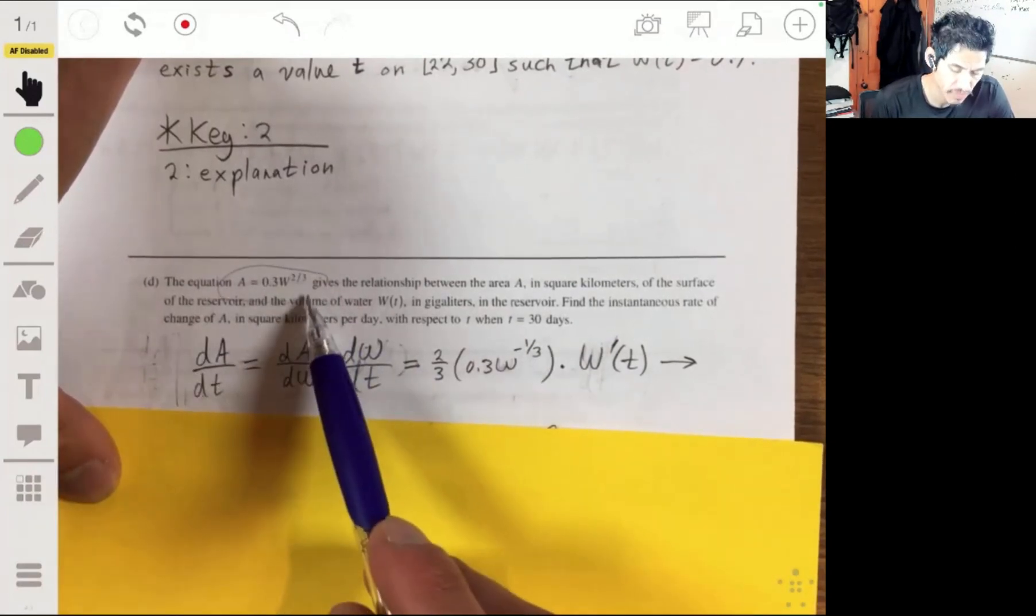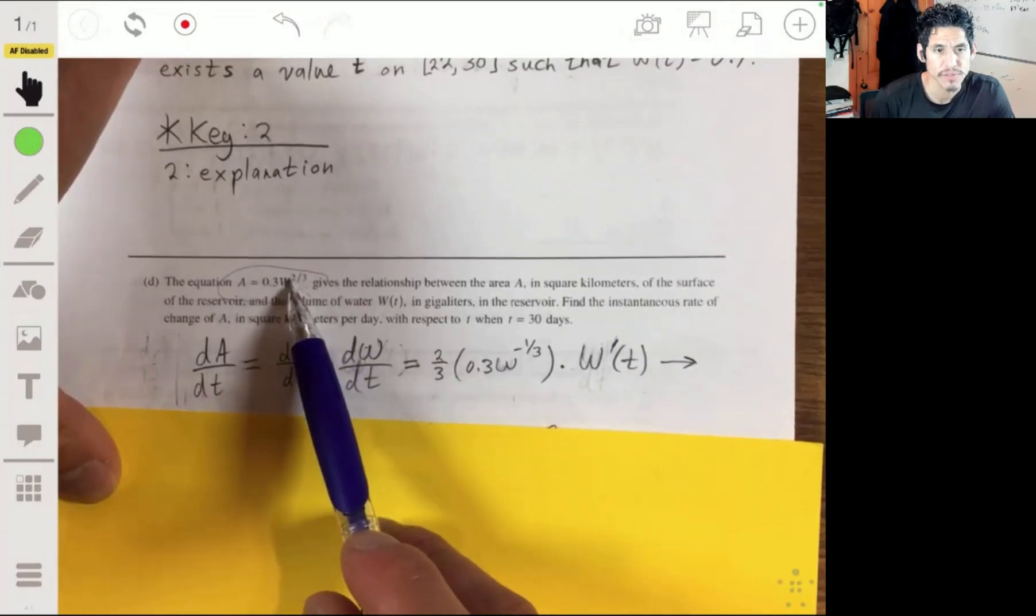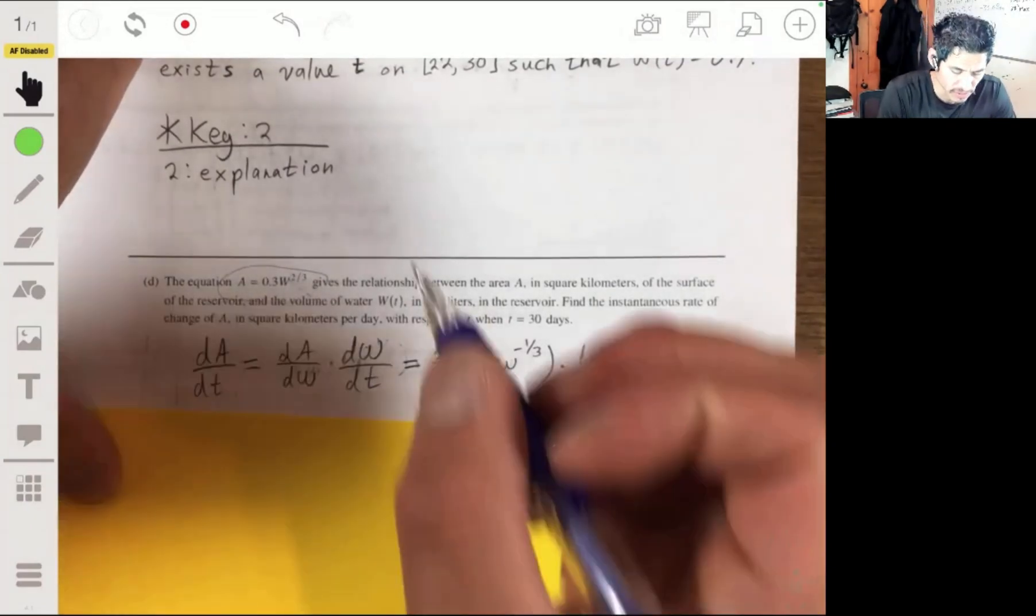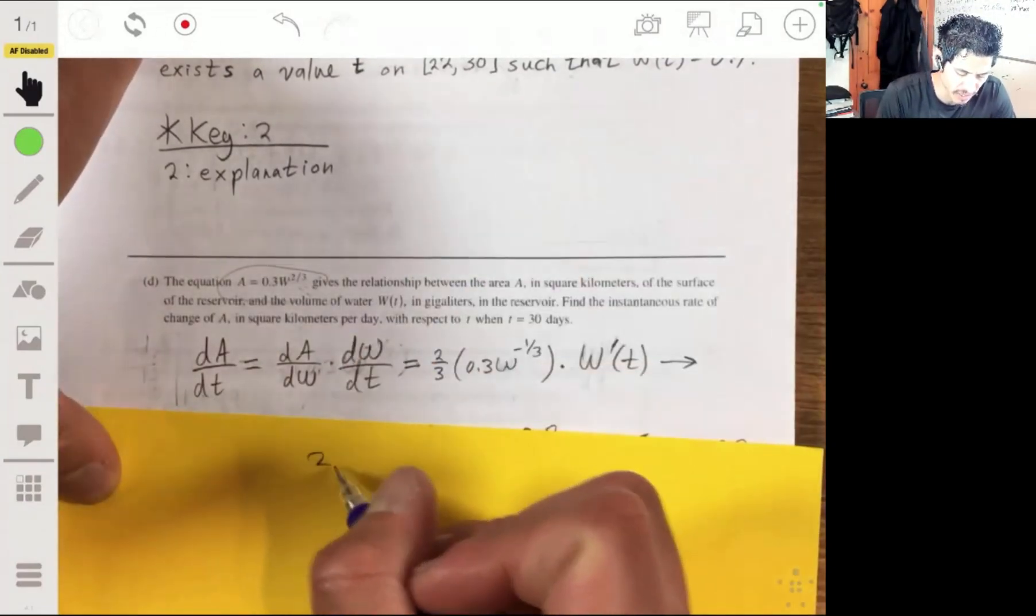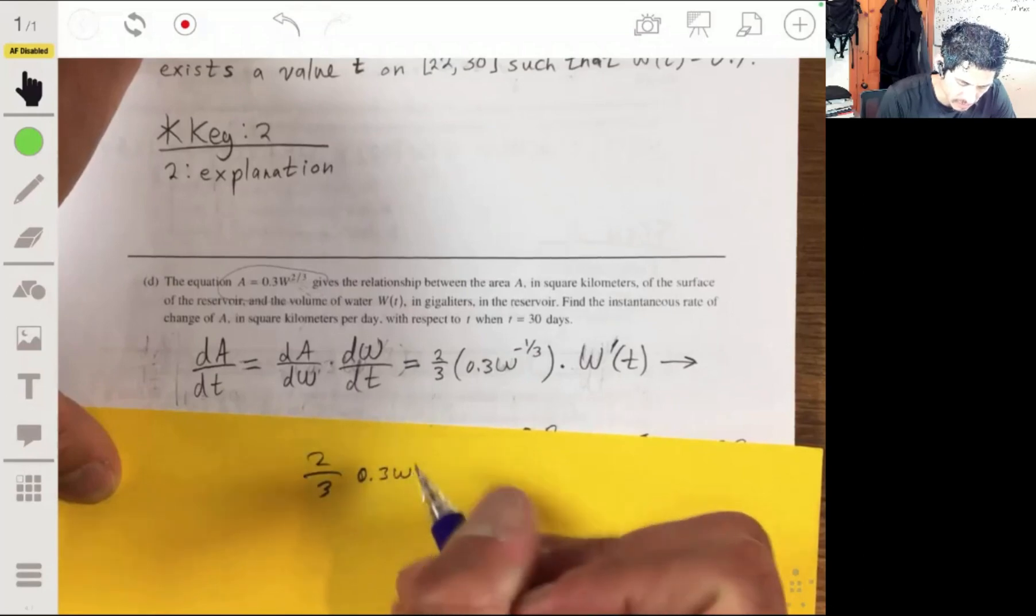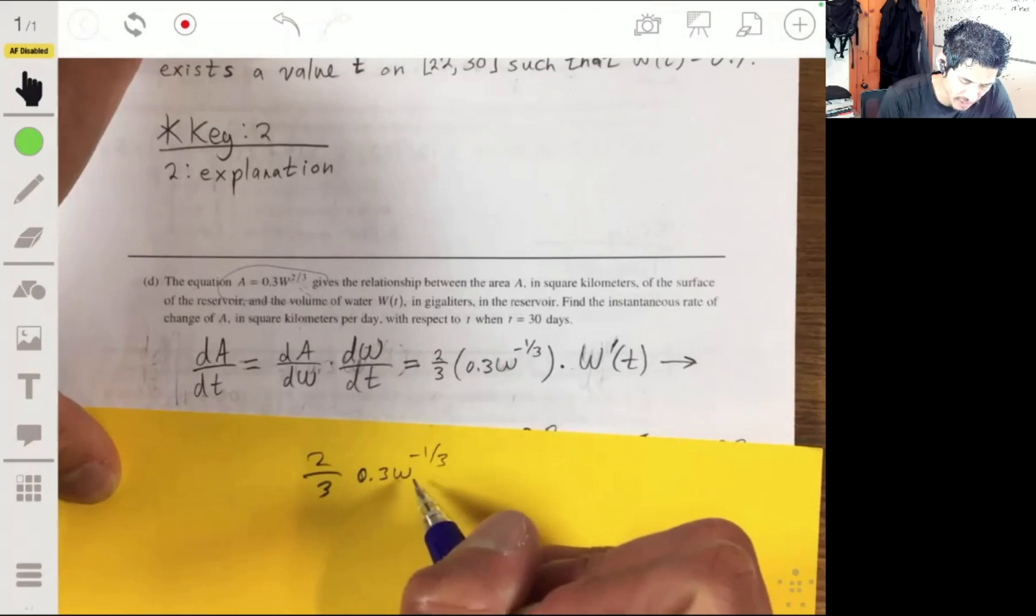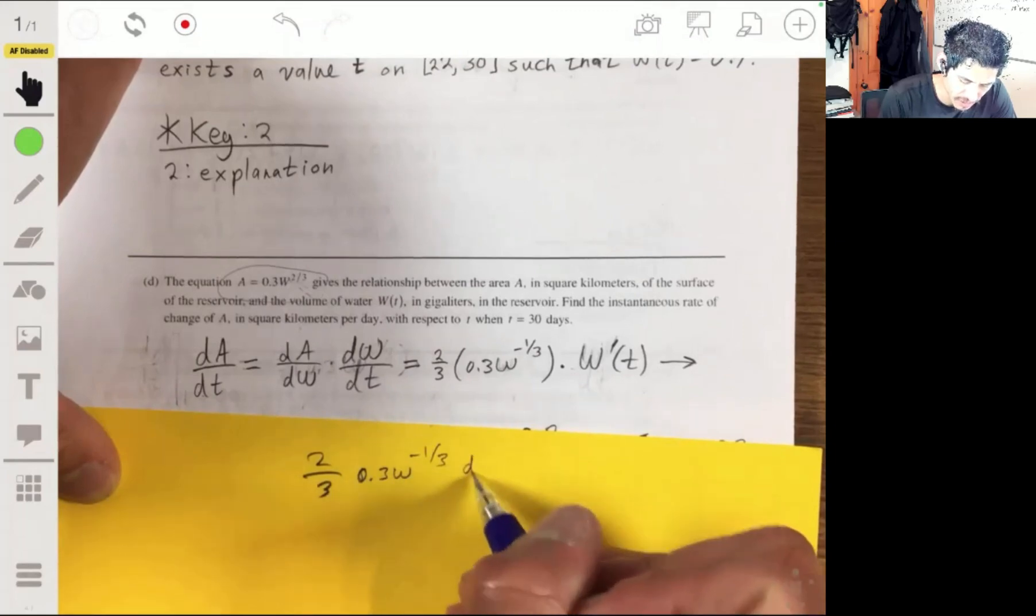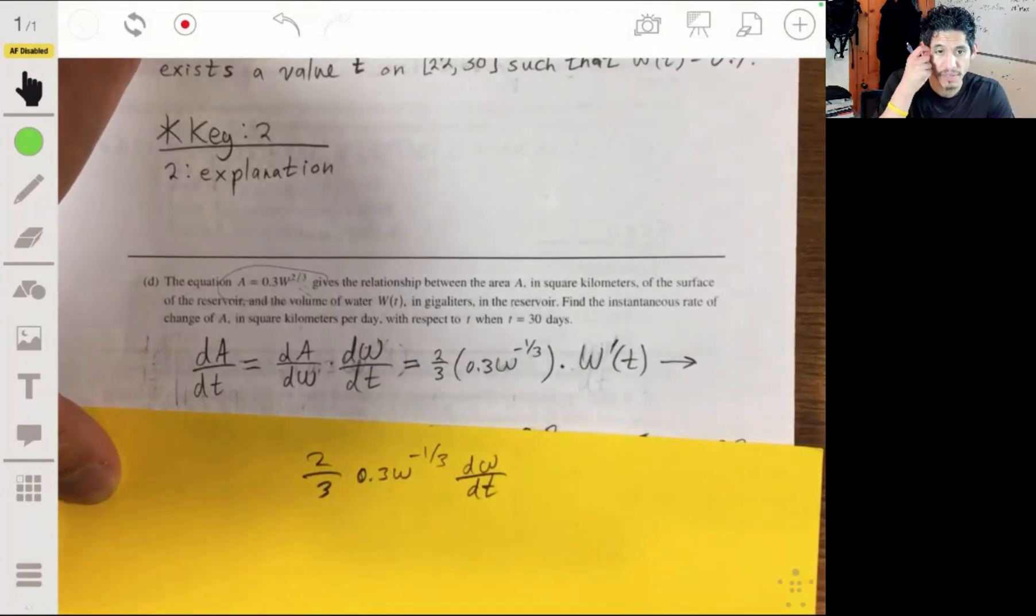So then we just have it here. Using the power rule, two-thirds times the 0.3 times w to the two-thirds minus one, which is negative one-third. But now we multiply it by the inside of that, so dw/dt, or w prime of t. And then we just work it down.